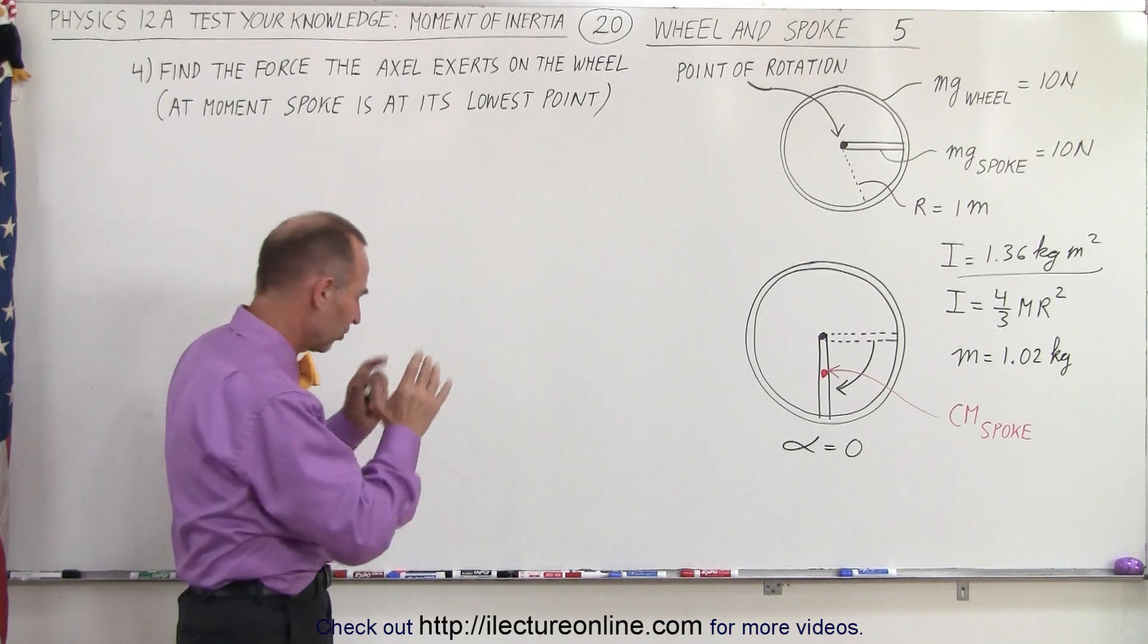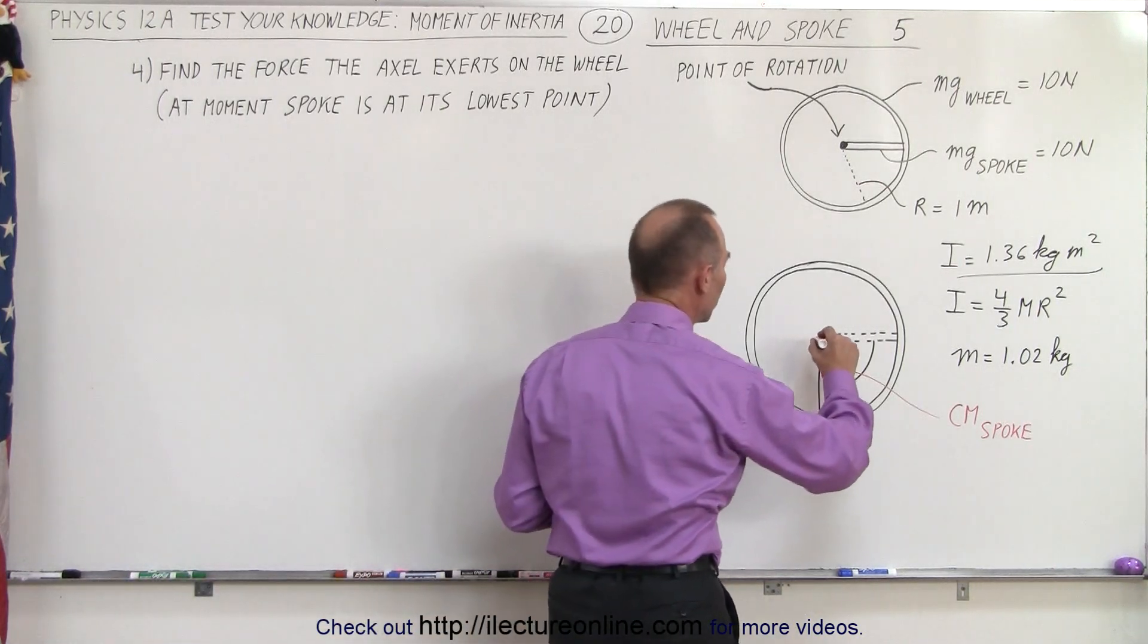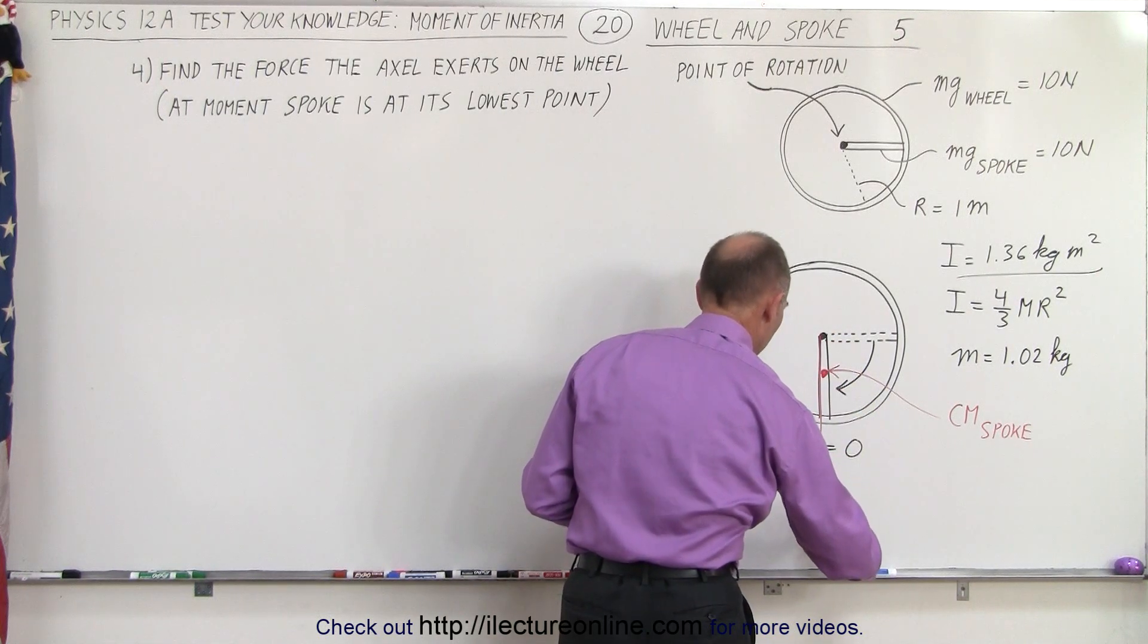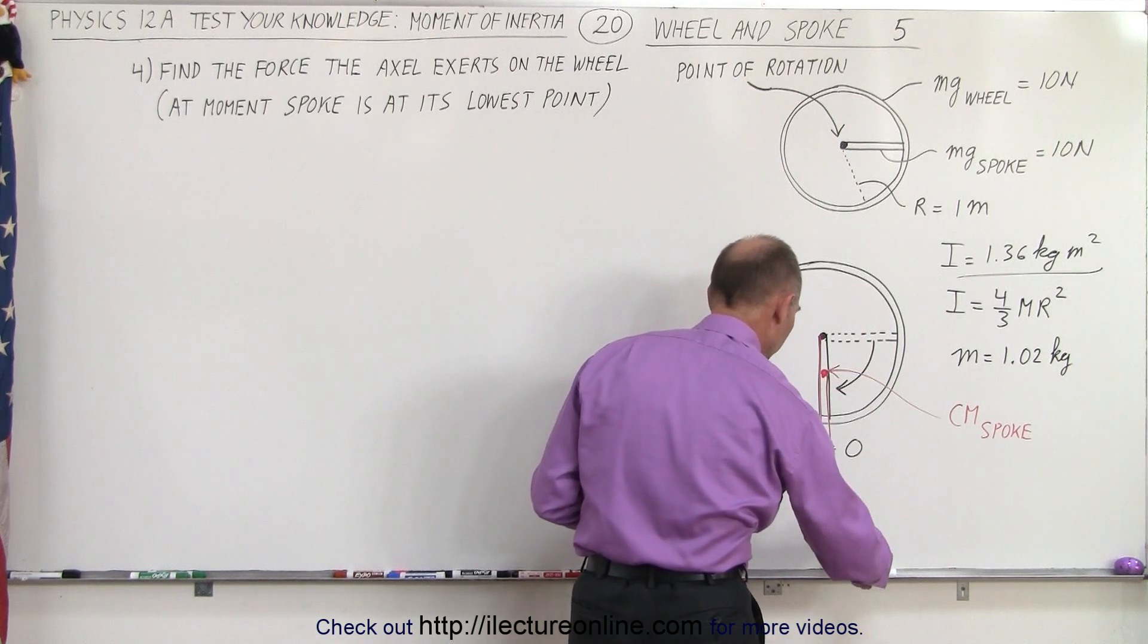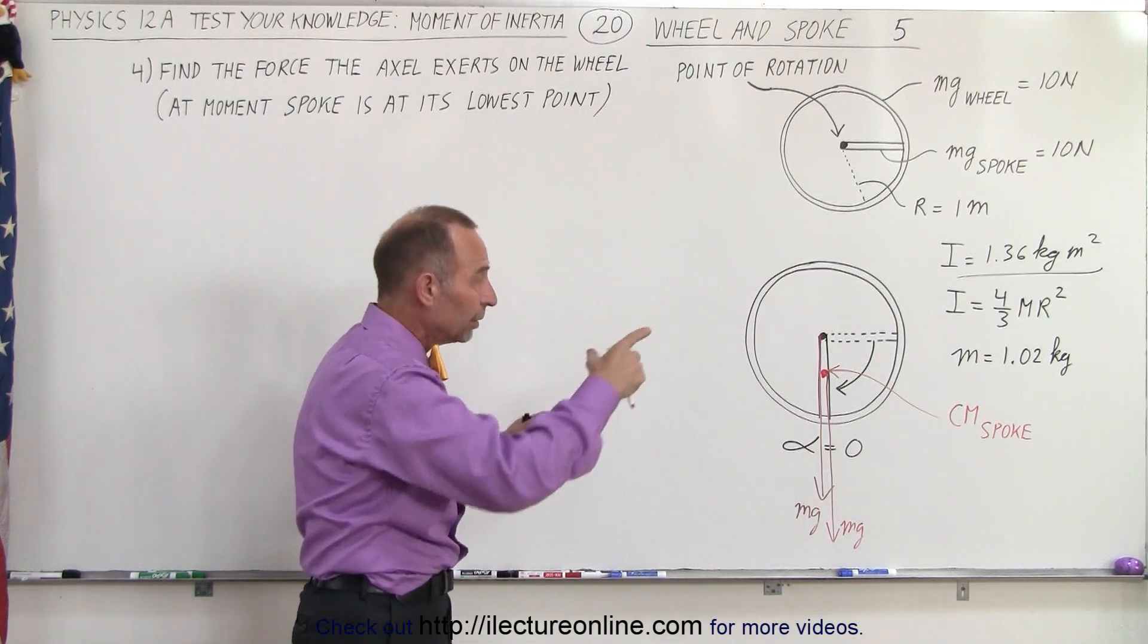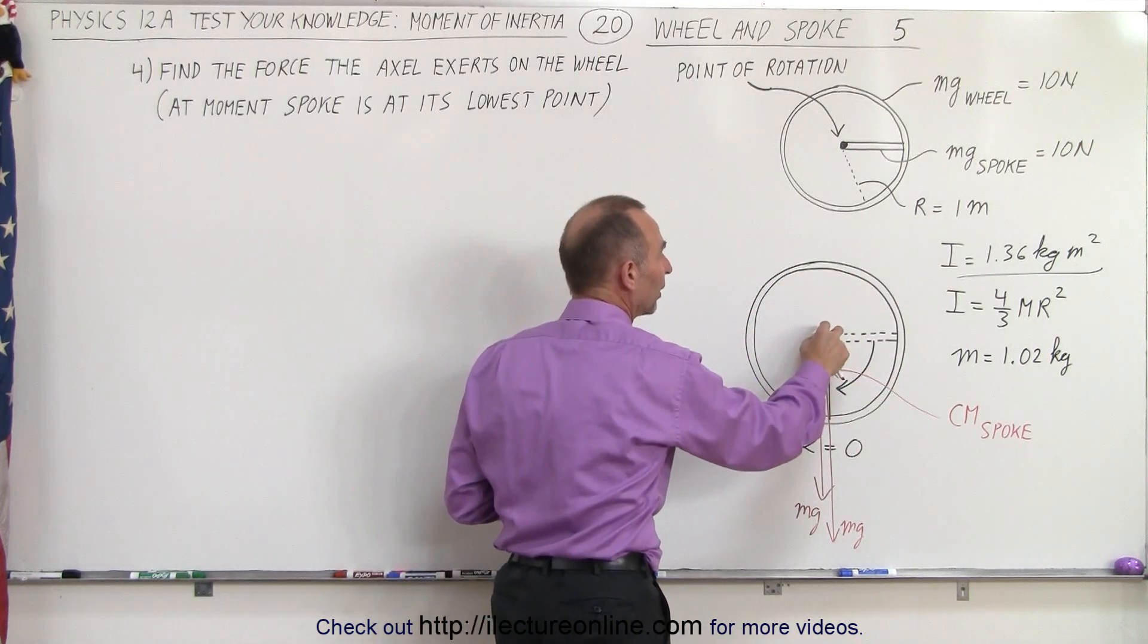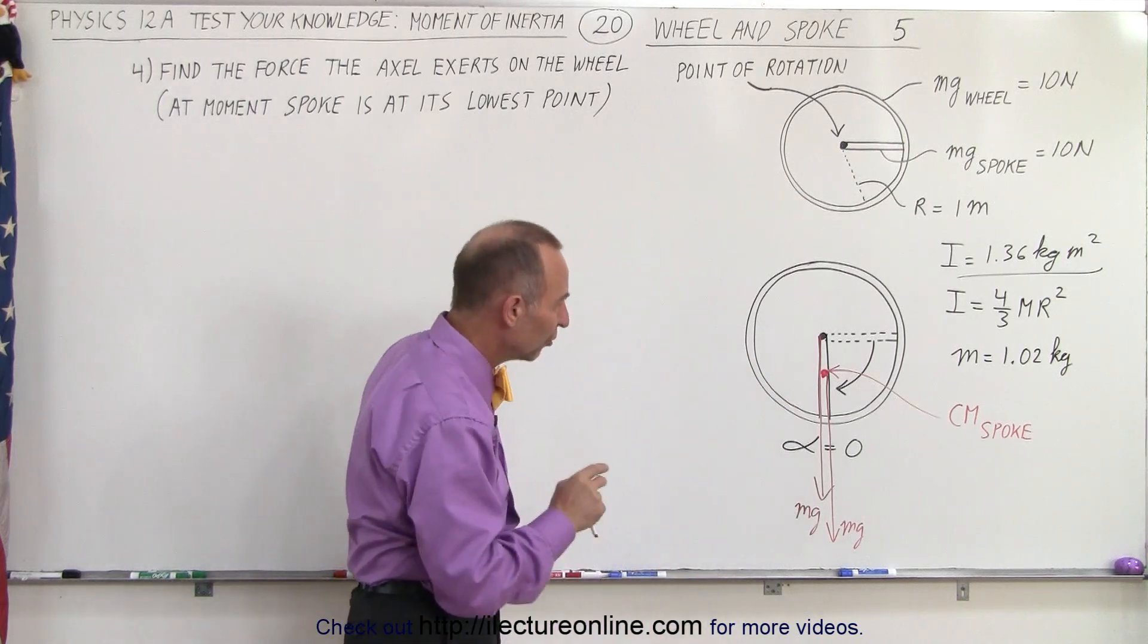So let's identify all the forces on the wheel at this moment. First of all, we have the weight of the wheel, that would be mg, and we have the weight of the spoke acting at the center of mass, so that would be another mg. We don't feel a centripetal force because of the wheel. The wheel has an equal mass distribution all the way around relative to the point of rotation, but the spoke does not.